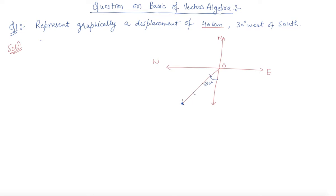So this unit is 40. So this P vector, or you can say the OP vector, is 40 kilometers and 30 degrees west of south. So this is how we represent the vectors.